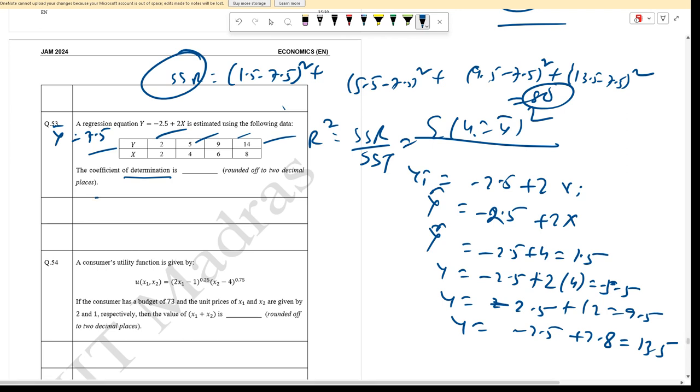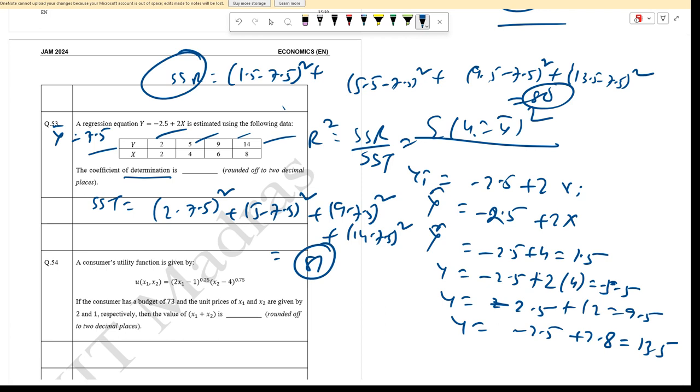SST equals sum of (Y_i minus Y_bar) squared: (2 minus 7.5)^2 plus (5 minus 7.5)^2 plus (9 minus 7.5)^2 plus (14 minus 7.5)^2. This equals 30.25 plus 6.25 plus 2.25 plus 42.25, which equals 81. Therefore R-squared equals 80 divided by 81.